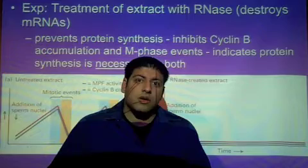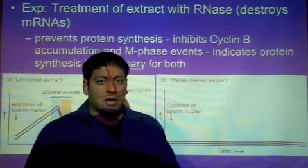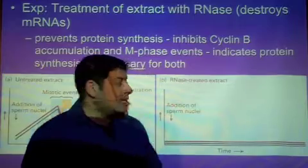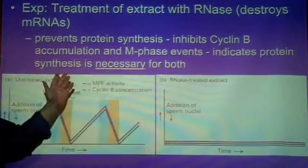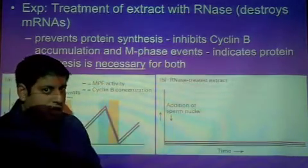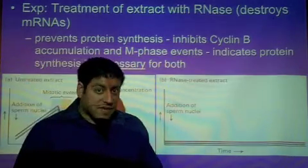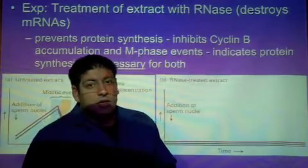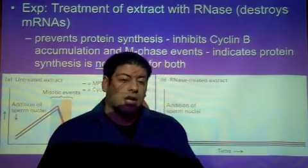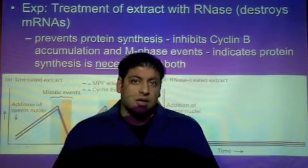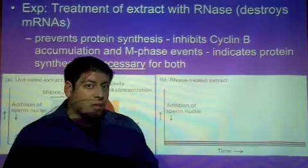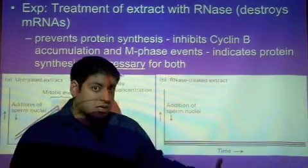This first part of the experiment by using RNase demonstrates that cyclin B is necessary for both cyclin B concentration and MPF activity. Killing off the messenger RNA of cyclin B shows that cyclin is necessary for MPF activity and therefore mitosis.